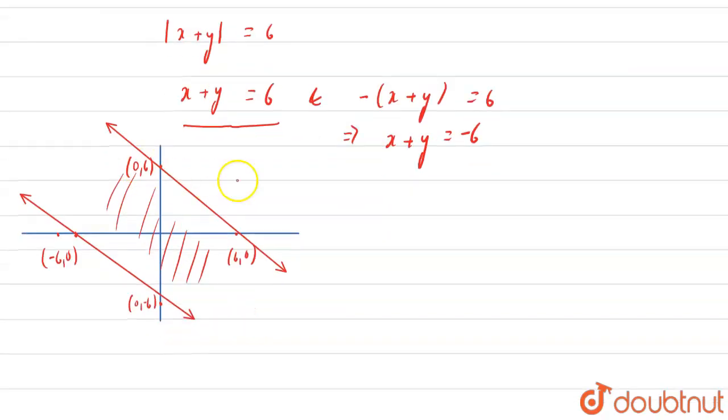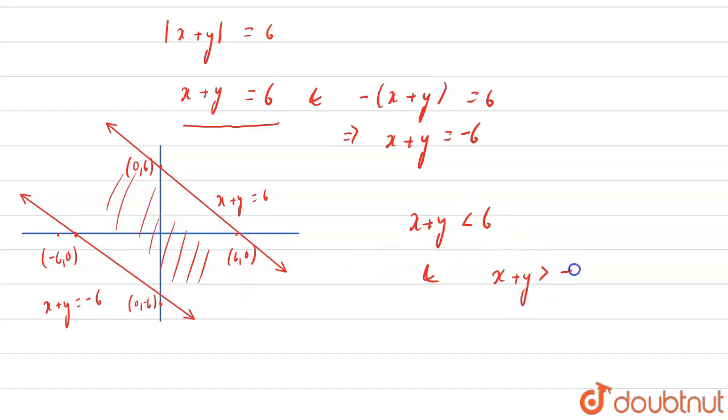So this area will be if we see then this is x plus y and it is less than 6. Because this is the line of x plus y equal to 6 and this is the line of x plus y equal to minus 6. So we have that x plus y is less than 6 and x plus y is greater than minus 6. So these are the common area for them.